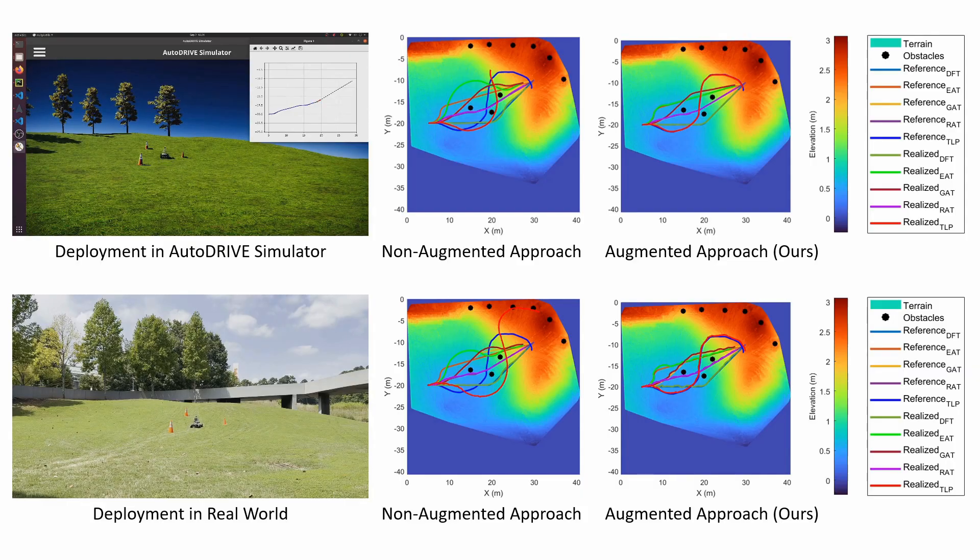Results indicate a nearly six-fold improvement in off-road navigation performance with the proposed algorithm and underscore the efficacy of digital twinning in terms of improving the sample efficiency by over three times and reducing the sim-to-real gap by over 5%.